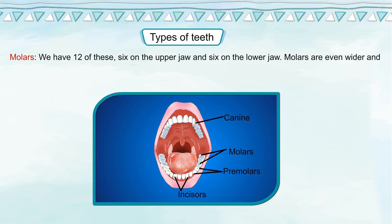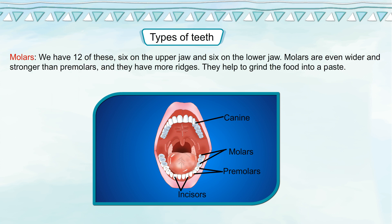Molars: we have 12 of these, 6 on the upper jaw and 6 on the lower jaw. Molars are even wider and stronger than premolars and they have more ridges. They help to grind the food into a paste.